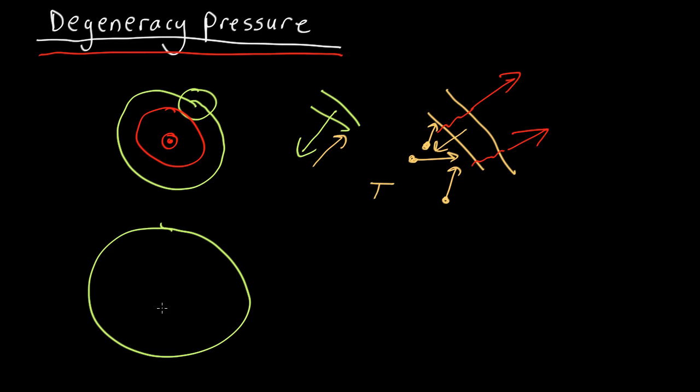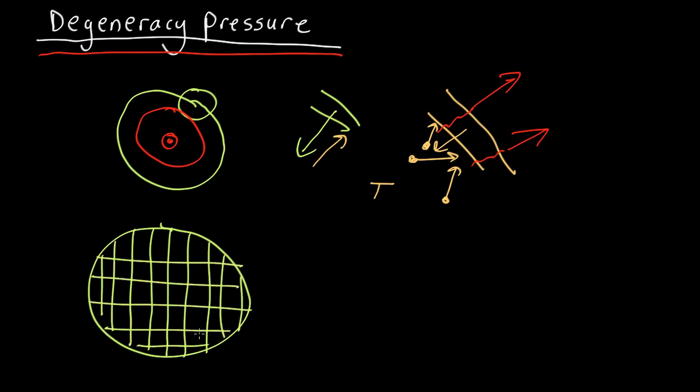Now, from the Pauli exclusion principle, we know that the electrons cannot all be, no two electrons can be in the same state. So, one way to think about that would be to divide our white dwarf into little cubes. And we'll put one electron in each cube. Now, the electrons can move back and forth inside the cubes, but they can't trespass into another cube, because that would be overlapping in state with another electron.